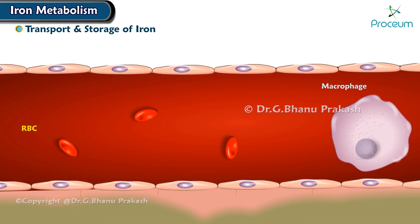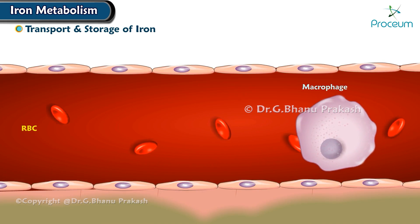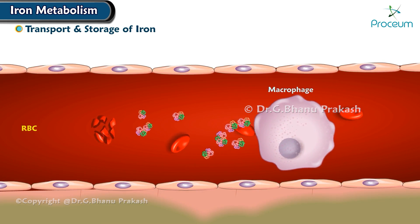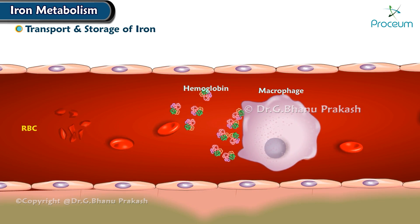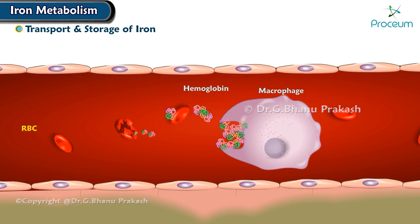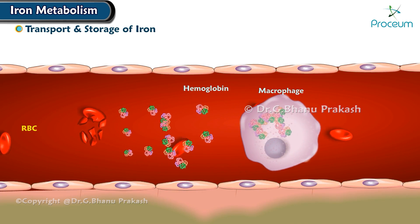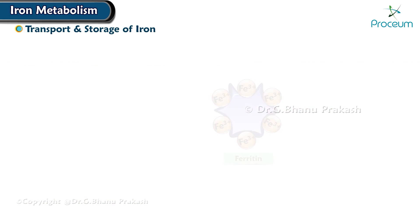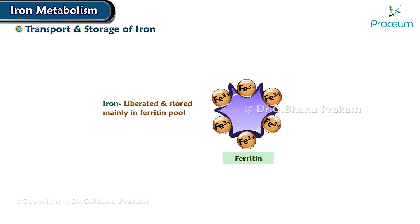When red blood cells have lived their lifespan and are destroyed, the hemoglobin released from the cells is ingested by monocyte-macrophage cells. There, iron is liberated and stored mainly in the ferritin pool to be used as needed for the formation of new hemoglobin.